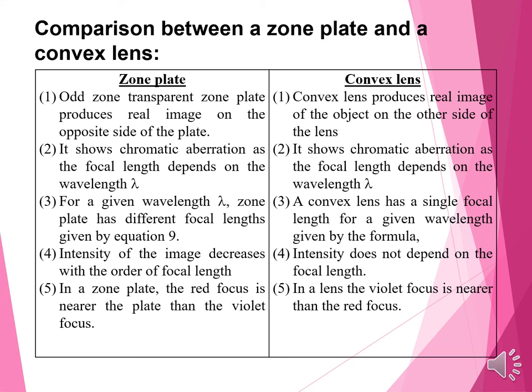Second: a zone plate shows chromatic aberration as the focal length depends on lambda. A convex lens also has chromatic aberration, that is distortion, as the focal length depends upon lambda. Third: for a given wavelength lambda, a zone plate has different foci given by the focal length equation. A convex lens has a single focal length for a given wavelength, given by the formula 1 over f equals 1 over u plus 1 over v. Fourth: the intensity of the image decreases with the order of the focal length in a zone plate. In a convex lens, intensity does not depend on the focal length.